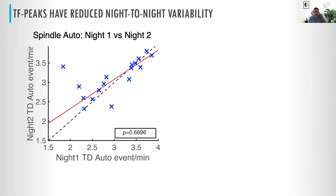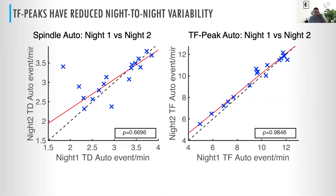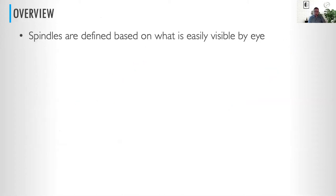What's exciting is that if we look at night-to-night consistency, for the spindle detector, night one versus night two gives a correlation coefficient of about 0.6. With the same data, if we look at the time-frequency peak night-to-night variability, it jumps way up to 0.98. So we have something that is exceptionally consistent and reduces variability night-to-night.